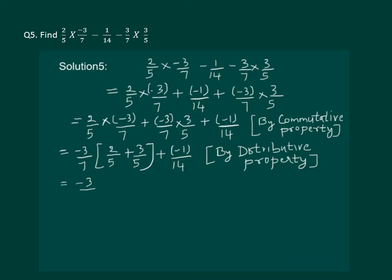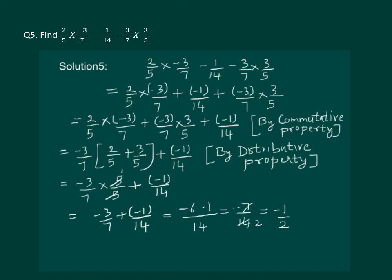Let us solve this further. We will get 5 by 5 plus minus 1 by 14. So we have minus 3 by 7 and minus 1 by 14 left. Let us solve further. We get 14 is LCM. And minus 6 minus 1 in the numerator, which gives minus 7 by 14, which is same as minus half. And which is our required answer.